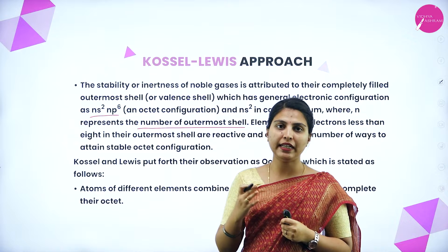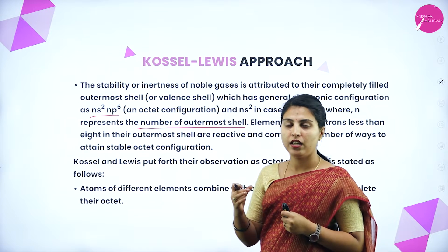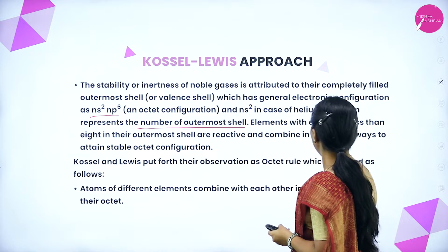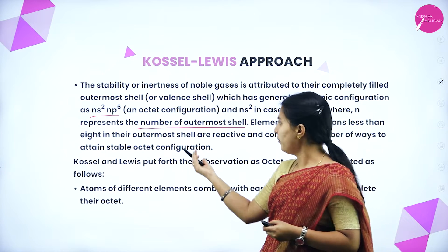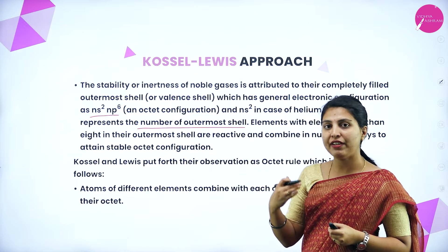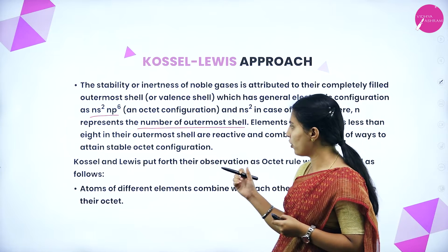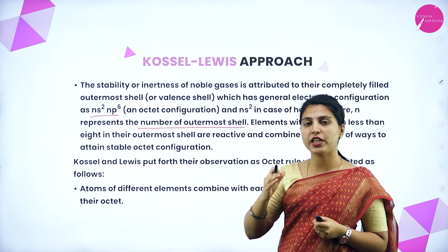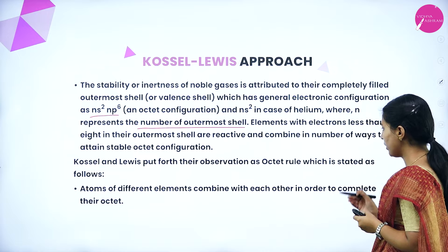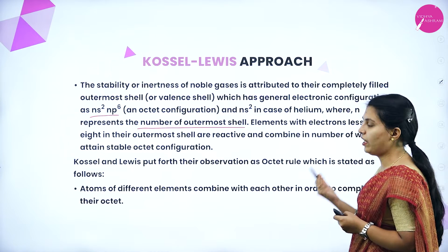Elements that have not filled up to ns² and np⁶ are not in a stable character and will react with other molecules. The inertness is less compared to noble gases. Kossel and Lewis put forth their observation as the octet rule, which states that atoms of different elements combine with each other in order to complete their octet. If an atom cannot attain octet configuration alone, it will combine with another atom of a different element through transfer of electrons to reach stability.